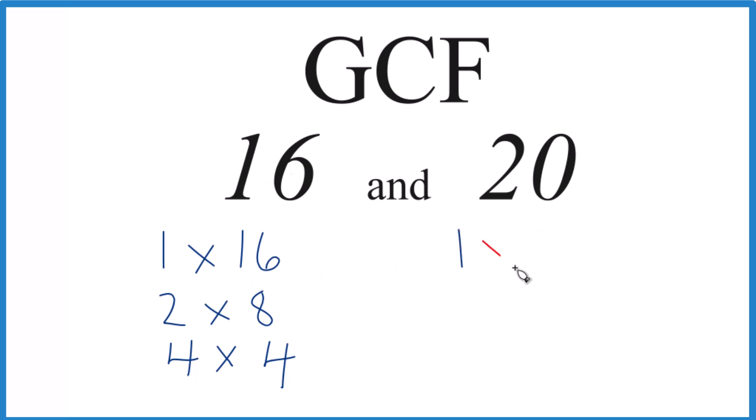For 20, we could have 1 times 20; 2 times 10, that would work; 4 times 5, that gives us 20, and I think that's it.